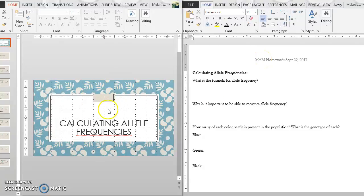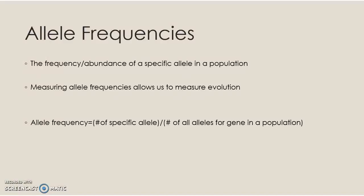We're going to calculate allele frequencies in this little presentation. The formula for allele frequencies is right here: allele frequency equals the number of the specific allele you're interested in, divided by the total number of alleles for that gene in a population. So if there were 14 different alleles, you could figure out the frequency of all 14, or just look at one — but it's for one gene.